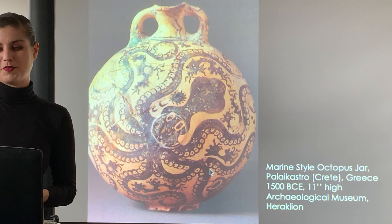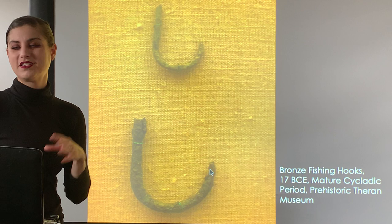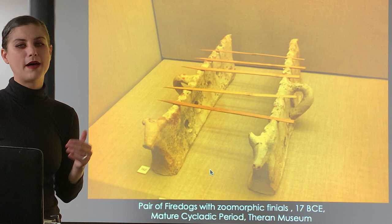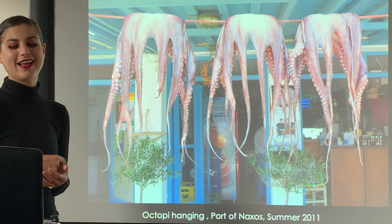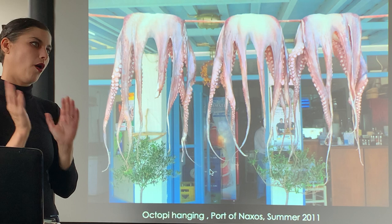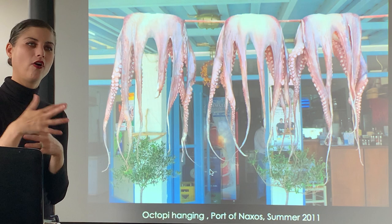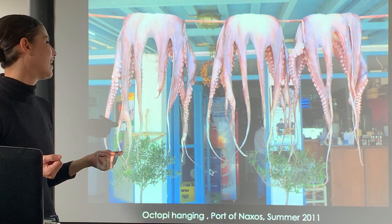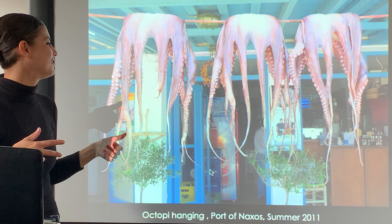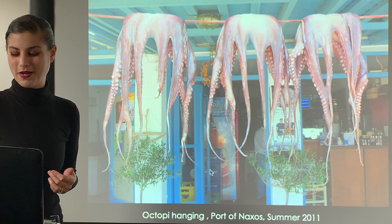Bronze fish hooks tell us a lot about how important fishing was. There are also bronze fire dogs for cooking kebabs and bronze scales for weighing goods in commerce and trade. In Greece today, fishermen still hang fresh octopi in the city center - octopus is one of the staple foods of the Greek world, used on everything from pizzas to soups and salads.